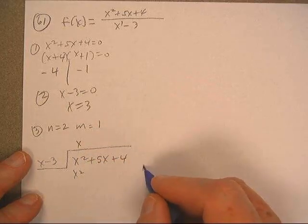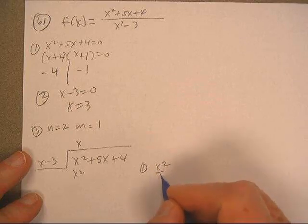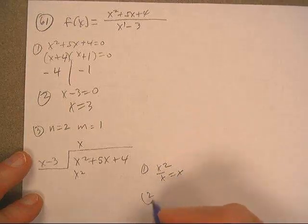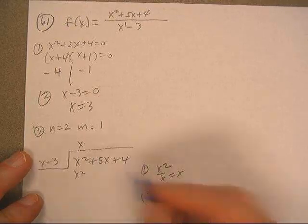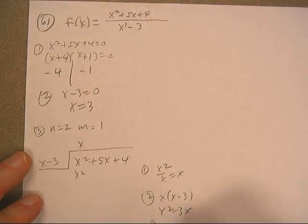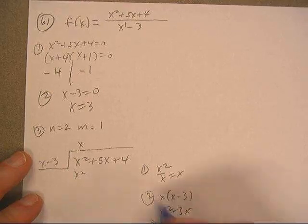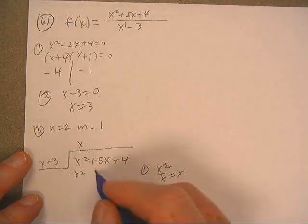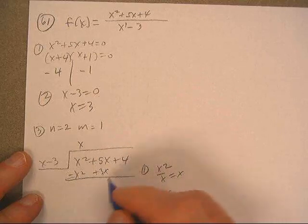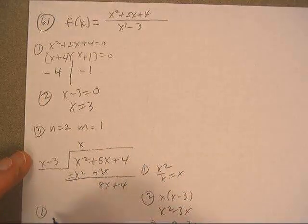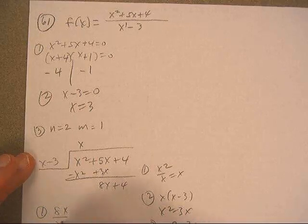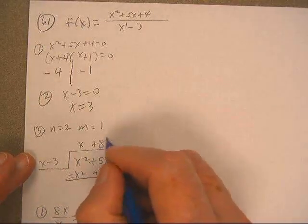There's step one. x squared divided by x is x. Step two is distribute. Step three is change the signs. Okay, the next division would be like this. That's eight.